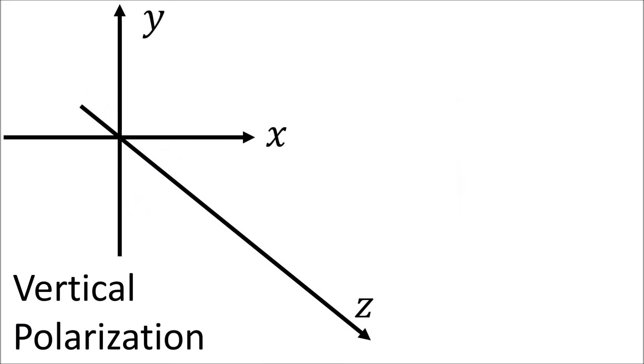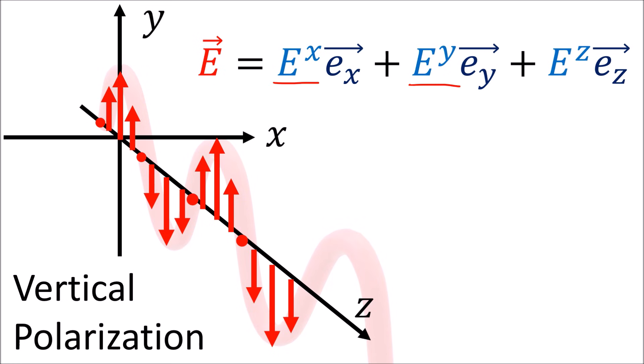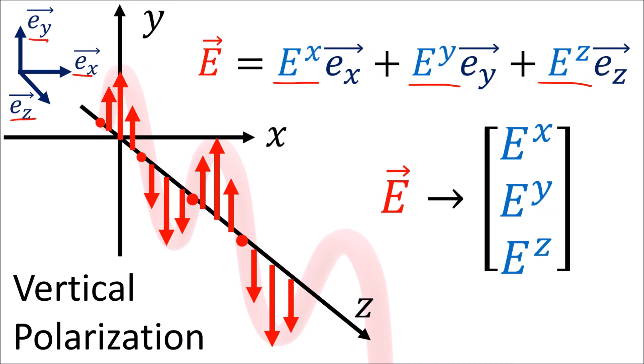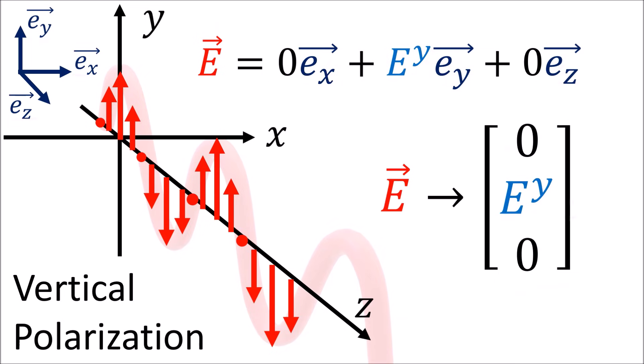Let's look more closely at a vertically polarized wave. The electric field is a vector field, meaning it is represented as an arrow at every point in space and time. The arrow has components in the x, y, and z directions, which we can write using a linear combination of the x, y, z basis vectors. We can also write this as a three-component column. For a vertically polarized wave, the electric field only exists along the y-axis, so the x and z components of the electric field go to zero.